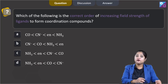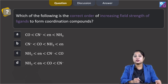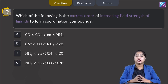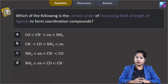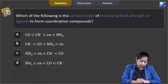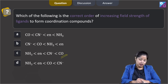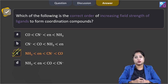Moving to the next question: which of the following is the correct order of increasing field strength of ligands to form coordination compounds? We are given a series of ligands and have to identify the correct order of their field strength. One thing to keep in mind: whenever a ligand has carbon as the donor atom, it generally has stronger field strength. So the correct sequence of ligand field strength is given in option C — the ligand field strength of CO (carbonyl) is highest and that of ammonia is least. The correct answer is option C.